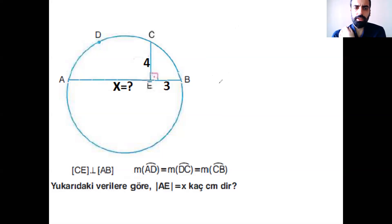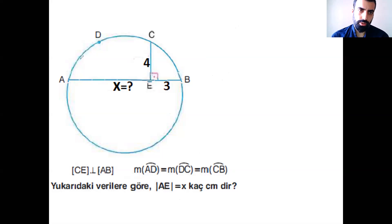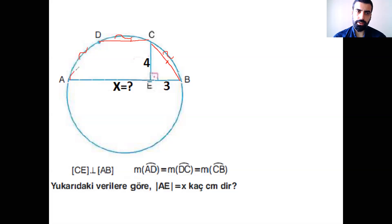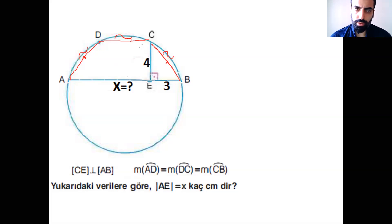Şimdi yavaştan başlayalım arkadaşlar. Burada bakıyoruz: AD yayı, DC yayı ve CB yayı sırasıyla eşitmiş. Yani şuradaki yay, buradaki yay ve buradaki yayın eşit olduğu bilgisi verilmiş. Biliyorsunuz ki yayın gördüğü kiriş uzunlukları da birbirine eşit. DC kirişini ve AD kirişini birleştiriyorum; bunların hepsi birbirine eşit olmak zorunda. Şimdi bu kirişlerin uzunlukları neymiş? 3 ise, 4 ise burasının 5 olduğunu rahatlıkla söylüyorum. O zaman burası 5 birim ve burası 5 birim.